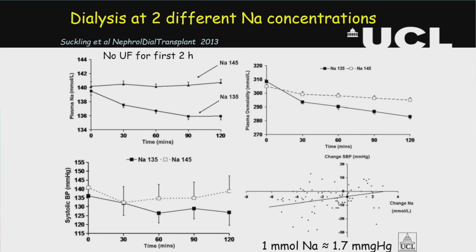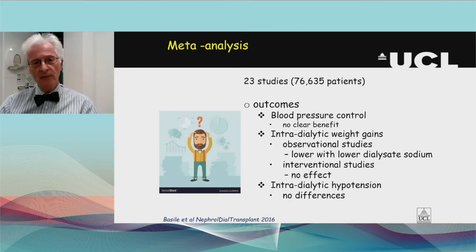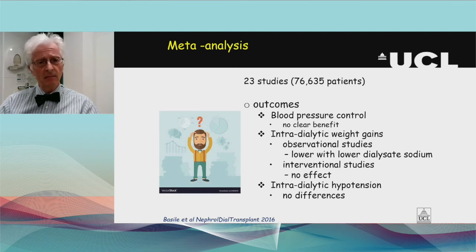These newer studies support the old statements: a high dialysate sodium better maintains blood pressure during dialysis, while a lower dialysate sodium leads to better blood pressure control between sessions and lower weight gains. However, a meta-analysis of 23 studies covering over 75,000 patients found no clear benefit of higher or lower dialysate sodium on blood pressure control — just a trend in observational studies that intradialytic weight gains were lower with lower dialysate sodium, and no effect in interventional studies, nor any differences in intradialytic hypotension.